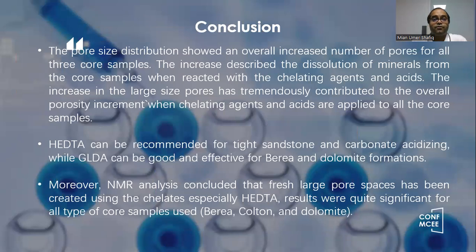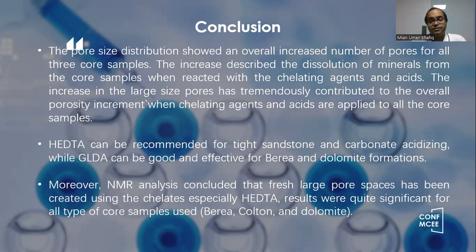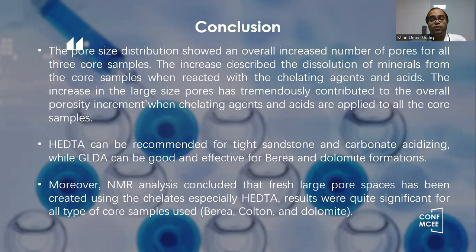In conclusion, the pore size distribution showed an overall increased number of pores for all three core samples. The increase described the dissolution of minerals from the core samples upon reaction with the chelating agents and acids. The increase in large pore size has tremendously contributed towards the overall increase in the porosity and permeability of the pore sample. HEDTA can be recommended for tight sandstone and carbonate acidizing, while GLDA can be good for various sandstone and dolomite. Nuclear magnetic resonance analysis confirmed that fresh large pore spaces have been created using the chelating agents, and especially HEDTA results are quite significant for all types of core samples.